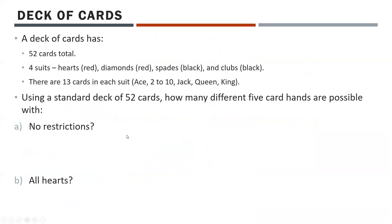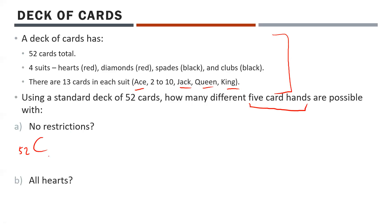Now a deck of cards context. A standard deck has 52 cards, four suits — hearts, diamonds, spades, clubs — 13 cards each: one ace, two through ten, plus jack, queen, and king (the face cards). How many different five-card hands are possible with no restrictions? Order doesn't matter in a hand, so it's 52C5, which gives 2,598,960.